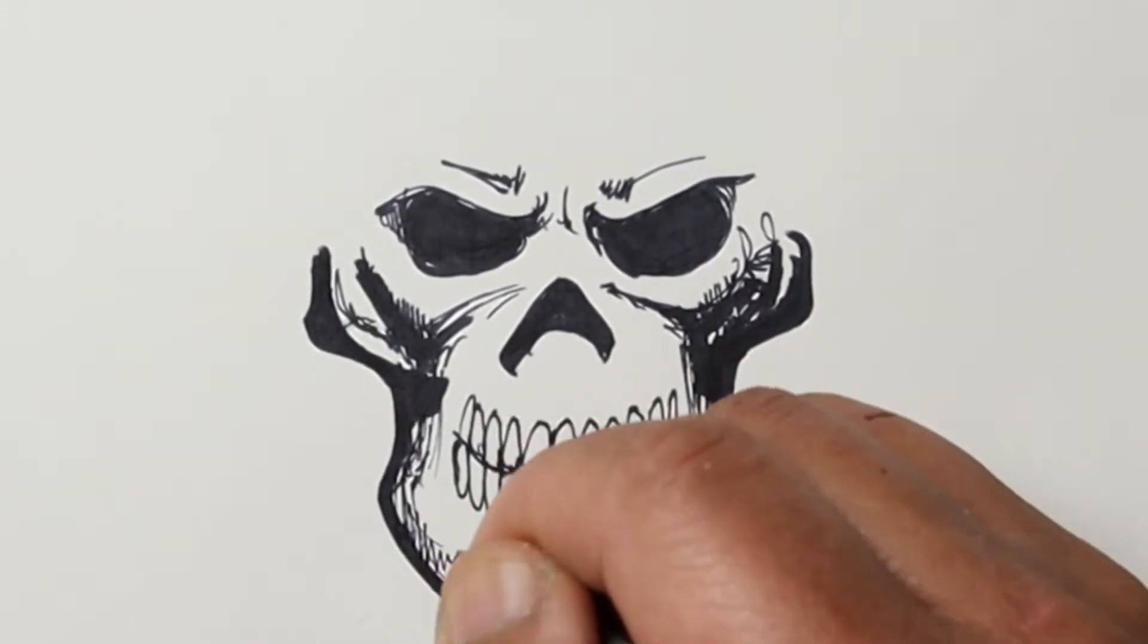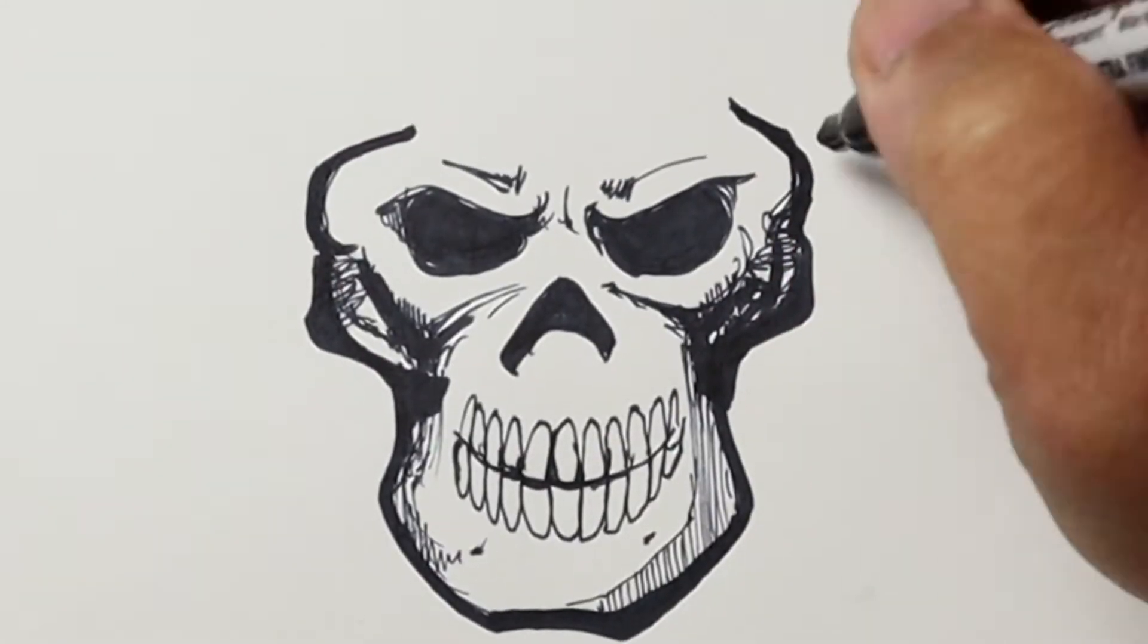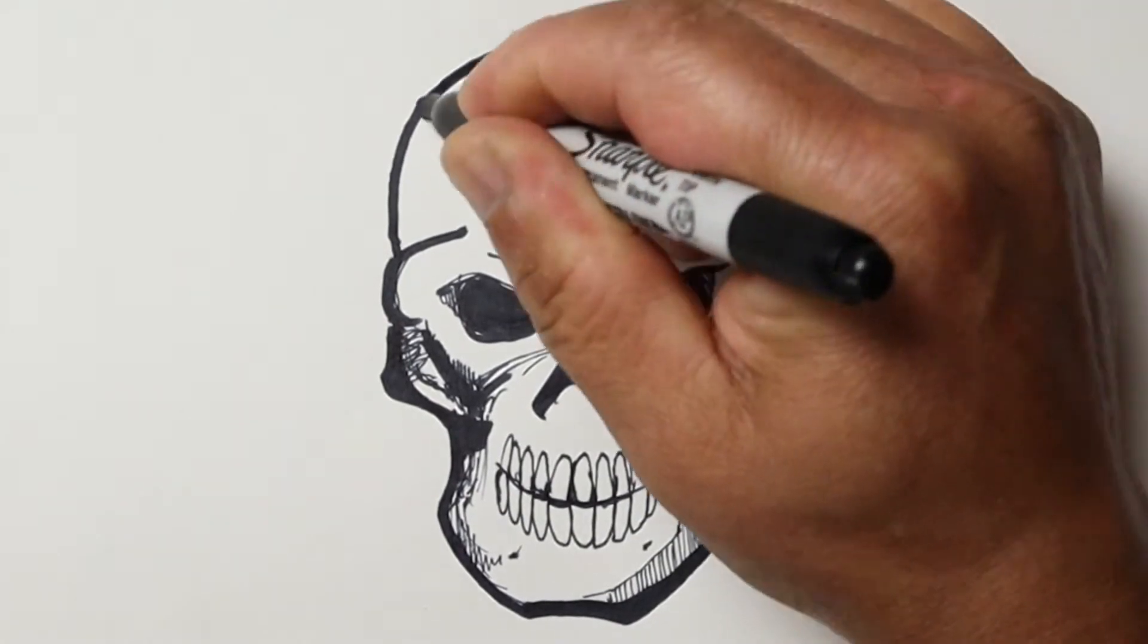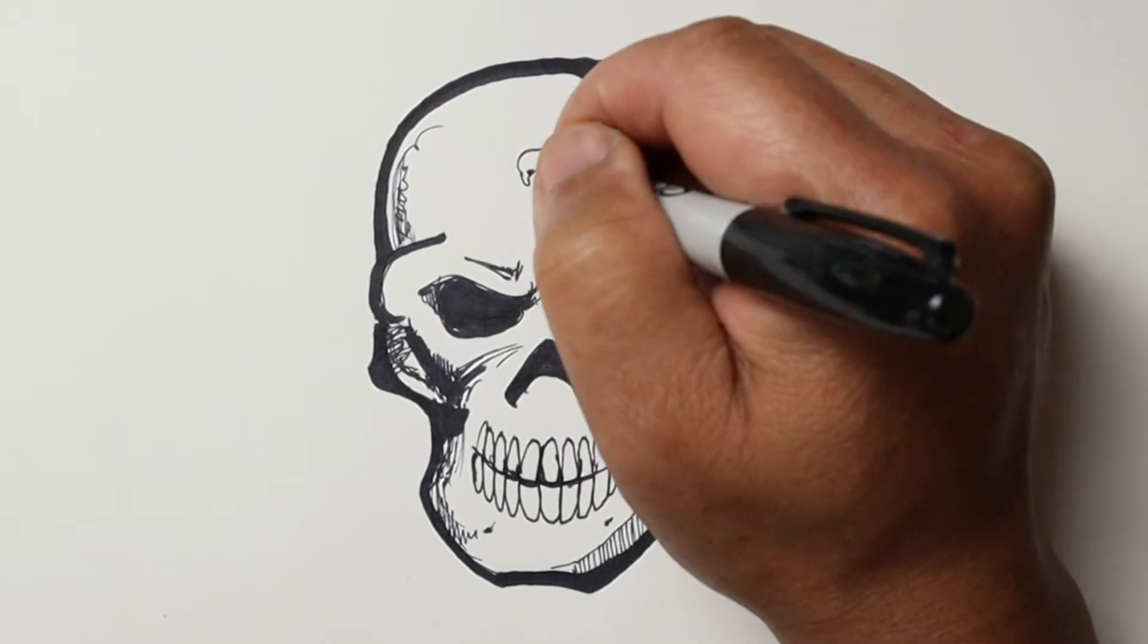I just start out with my sharpie to get in the blacks very quickly and switch to finer point markers for the details and for the shadows.